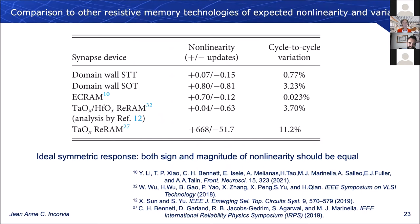We can do further comparisons. For the non-linearity in updates, for an ideally symmetric response we want both the sign and magnitude of the non-linearity to be equal. We get a pretty good case for the domain wall devices. We can also look at cycle-to-cycle variation in simulation based on temperature and tunnel junction parameters.